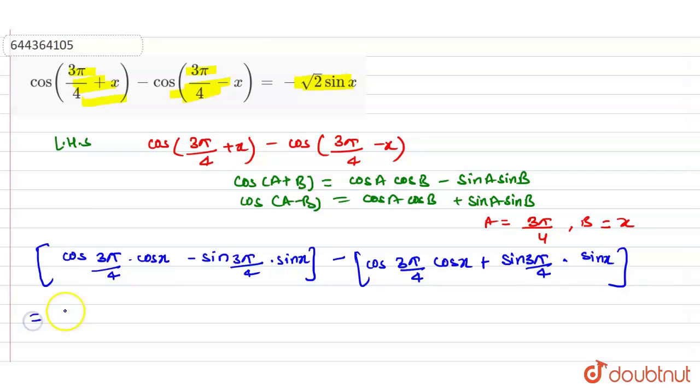So on opening these brackets we have cos 3π/4 into cos x minus sin 3π/4 sin x.